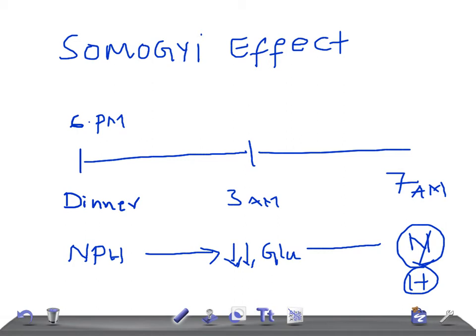So the patient with Somogyi effect takes high or excess NPH at dinner time, and at 3 a.m. the glucose is very low because of the high NPH dose. Because of the low glucose, the body reacts by releasing stress hormones, causing the blood glucose level to rise. Now just imagine — if in the early morning you measure the blood glucose and it is high, you might think you need to increase the NPH further, but that is very dangerous to the patient. That's why we measure the glucose at 3 a.m. to know the exact dose of NPH to be administered.